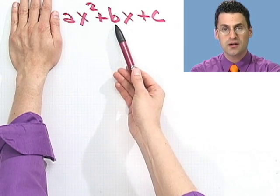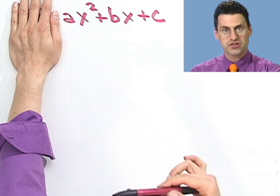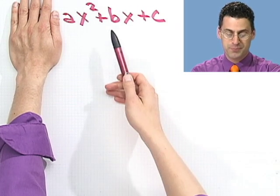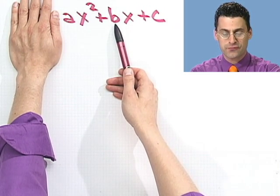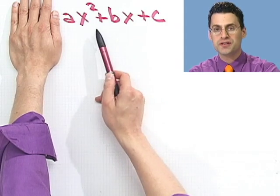The quadratic equation says if you set that equal to 0 and solve, then the solution is x equals negative b plus or minus the square root of b squared minus 4ac all divided by 2a.